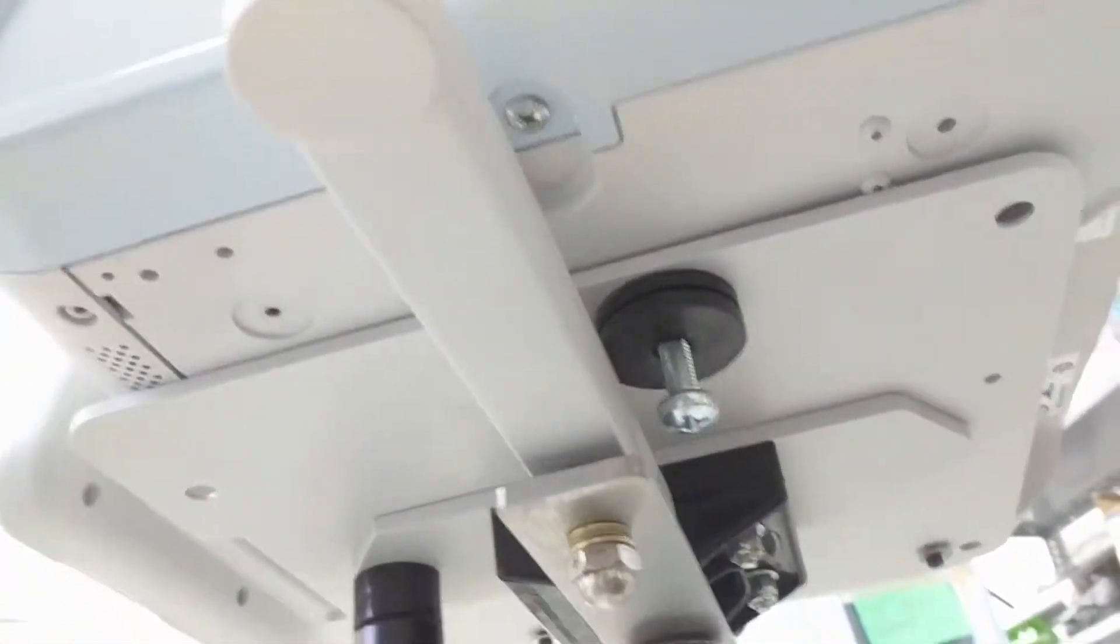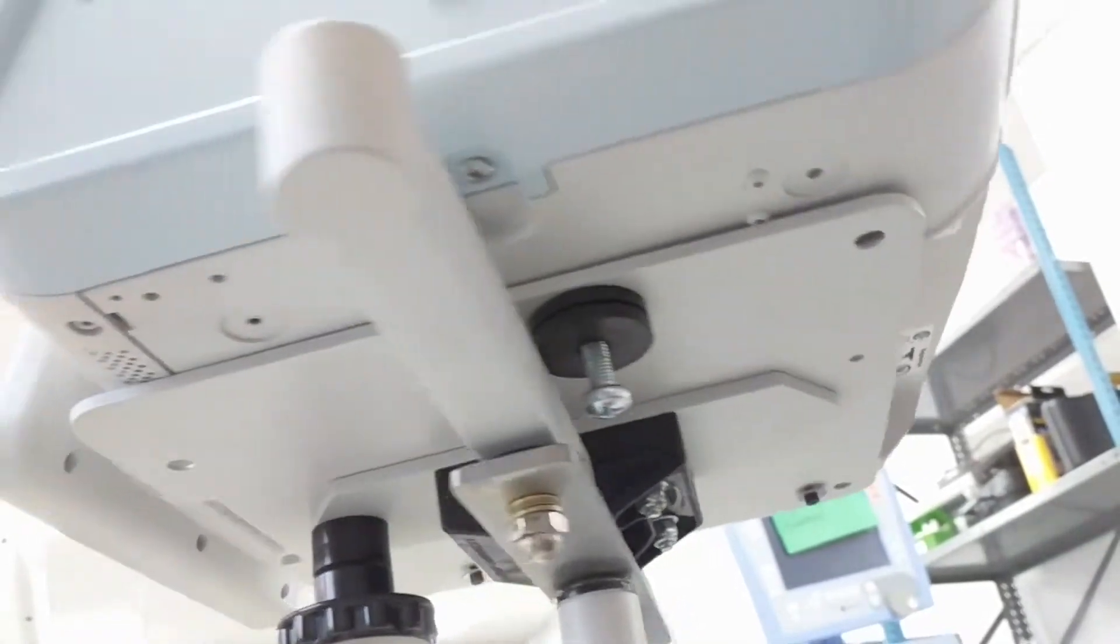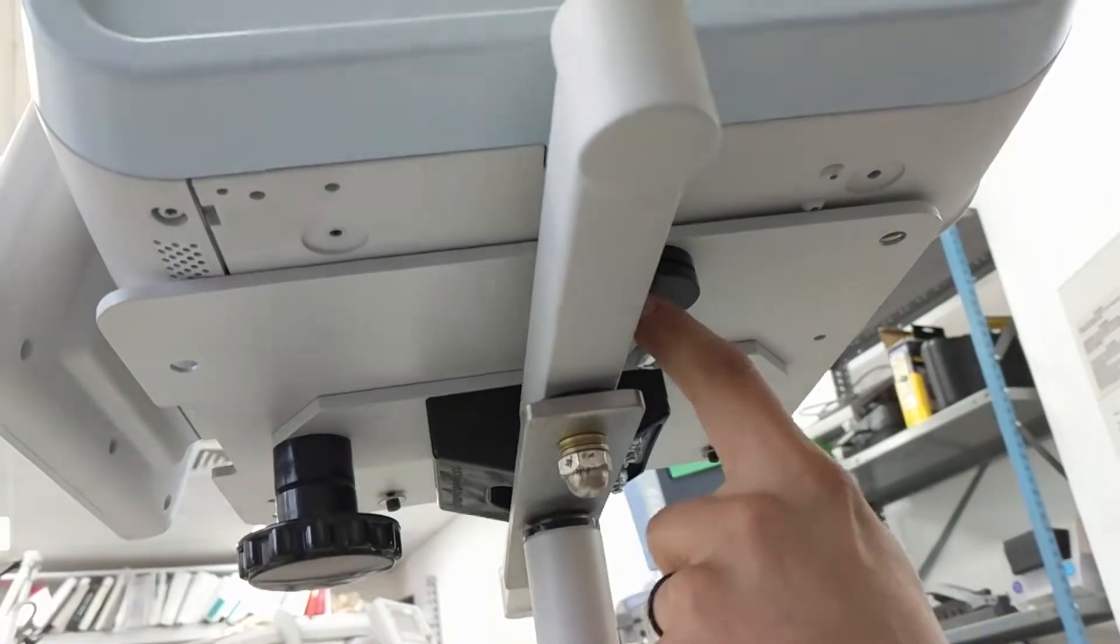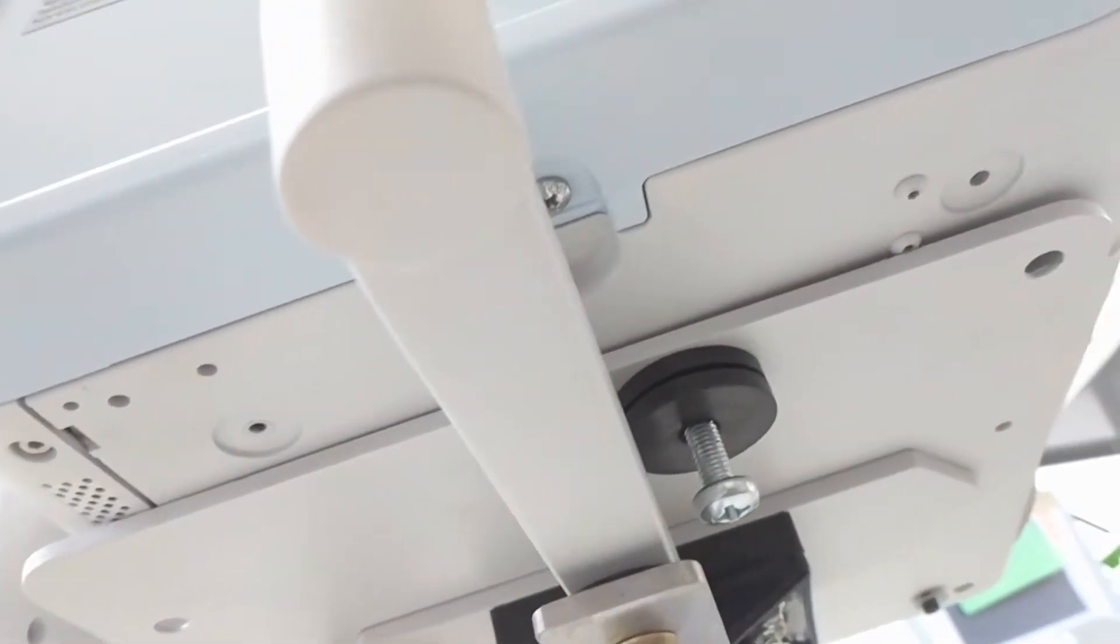All right, so we have the bottom section of the V60. So this is the unit facing you. As you can see, this is the larger front hole. This is the screw that you want to put in first.